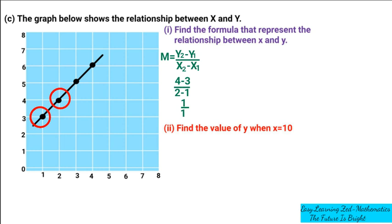Now that we've found the gradient, we can find the expression for this formula. We use Y = MX + B, where M is the gradient, X is the variable, and B is the Y-intercept. The Y-intercept is the point at which the line crosses the Y-axis. In this case the line is crossing the Y-axis, so we need to calculate the Y-intercept.